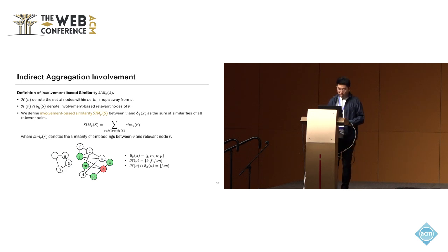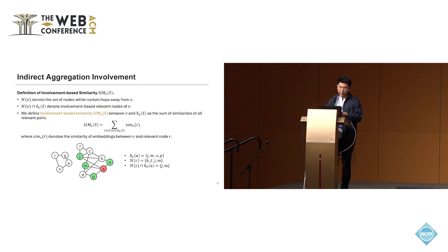For example, in the third bullet point, the relevant nodes would be J and M, and the sum of similarity between all relevant pairs would be the similarity between J and node V, and M and node V.